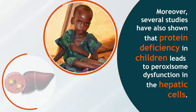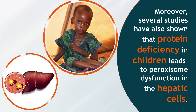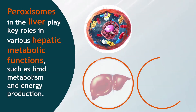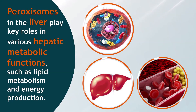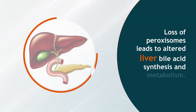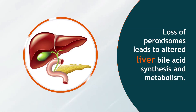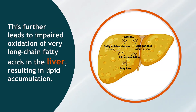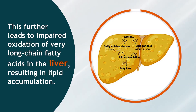Several studies have also shown that protein deficiency in children leads to peroxisome dysfunction in the hepatic cells. Peroxisomes in the liver play key roles in various hepatic metabolic functions, such as lipid metabolism and energy production. Loss of peroxisomes leads to altered liver bile acid synthesis and metabolism, which further leads to impaired oxidation of very long-chain fatty acids in the liver, resulting in lipid accumulation.